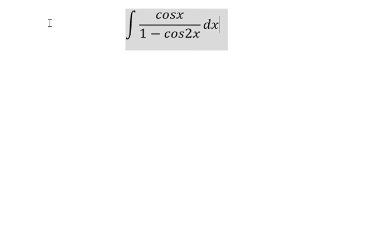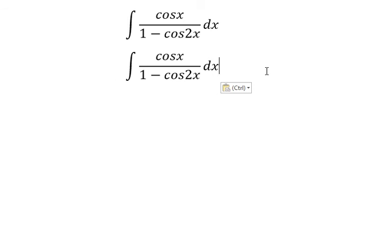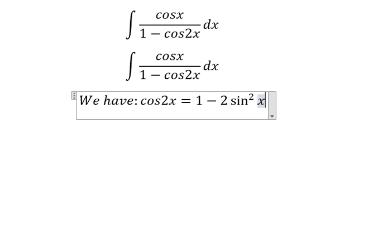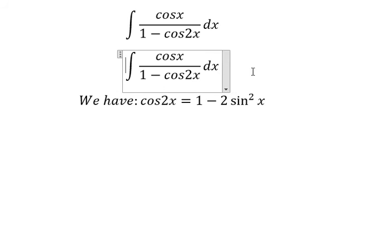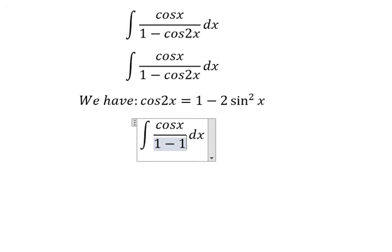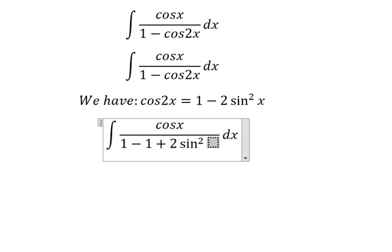We have cosine 2x equal to 1 minus 2 sine squared x. So we need to control this one. You will have negative 1 plus 2 sine squared x.